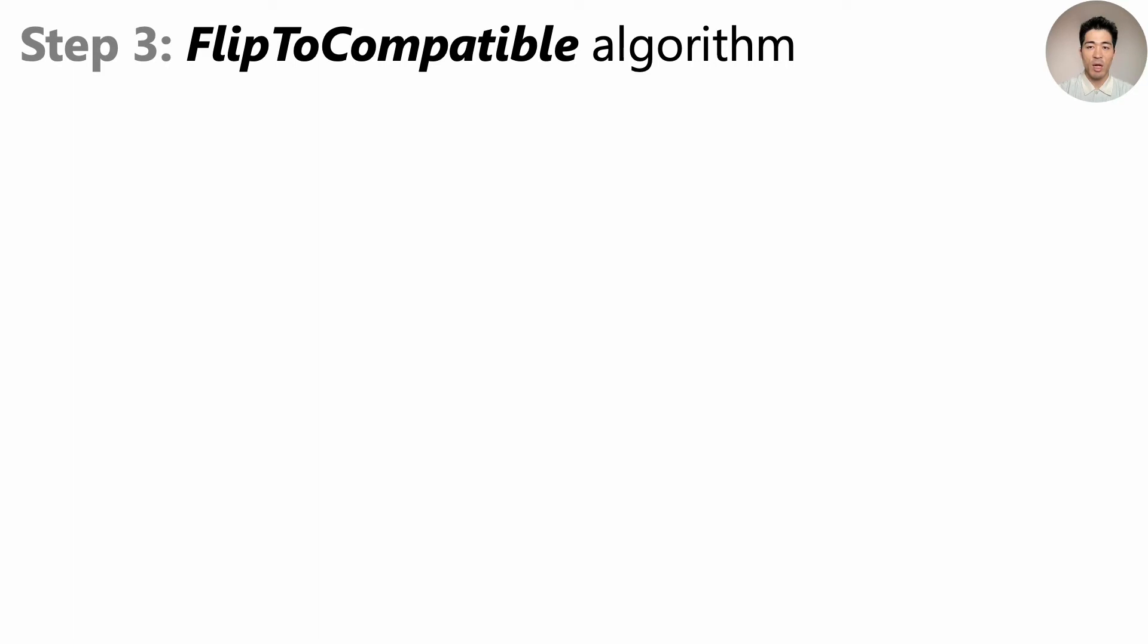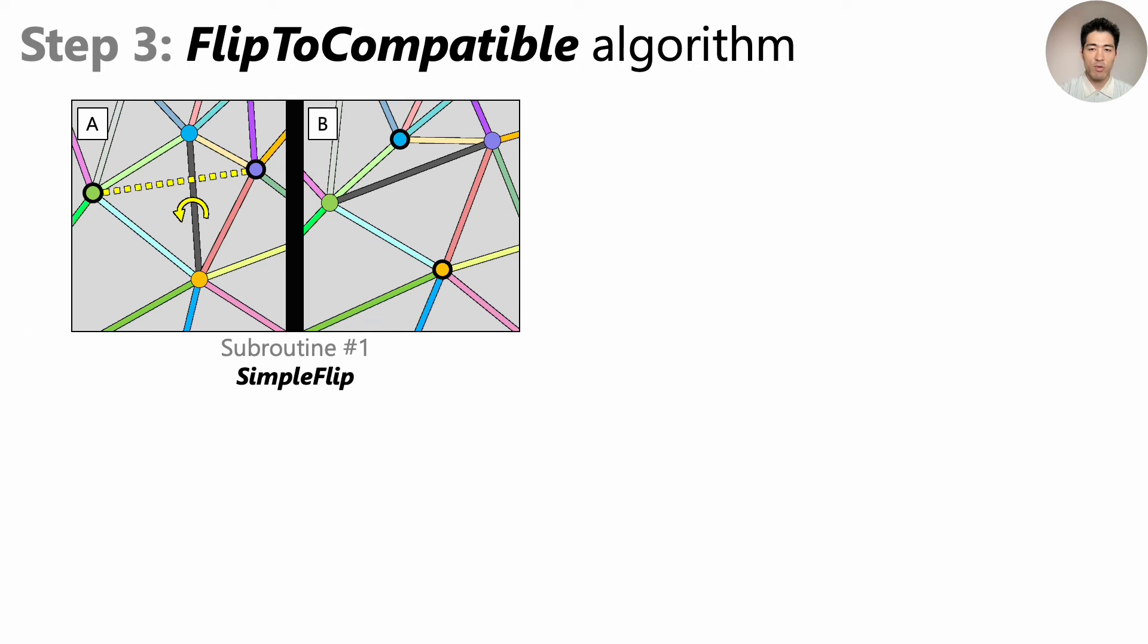Our step 3 is an algorithm called Flip2Compatible, which consists of a few subroutines. The first subroutine is shown here, which is very simple. For this incompatible edge, clearly flipping it will make it compatible.